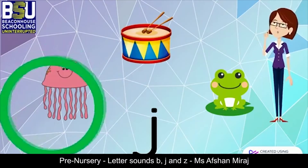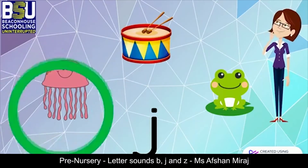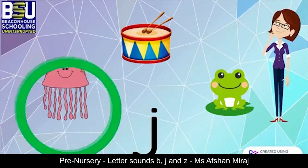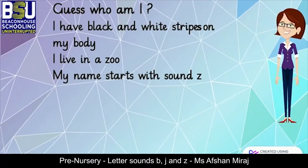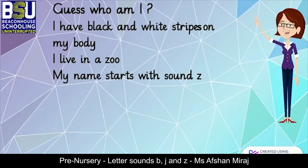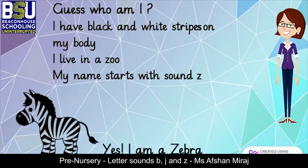J — jellyfish! Guess who I am: I have black and white stripes on my body, I live in a zoo, and my name starts with the sound Z. Yes, I am a zebra!